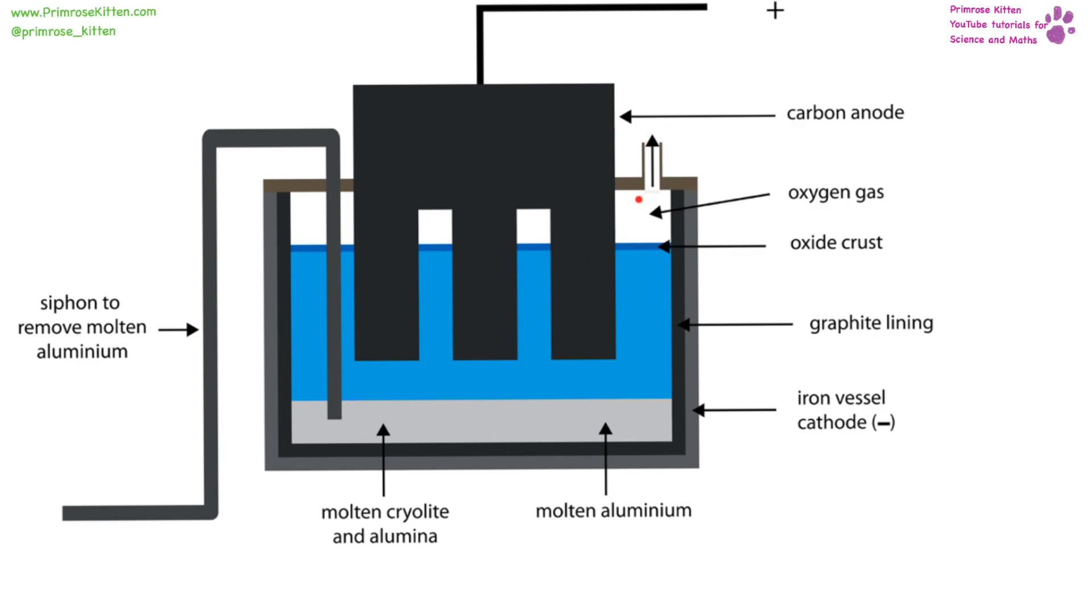At the bottom, at the negative cathode, we are going to be attracting the positive aluminium ions. They are going to be picking up electrons and turning into aluminium atoms. This is three plus, so it needs to pick up three electrons.